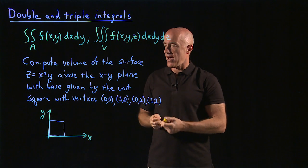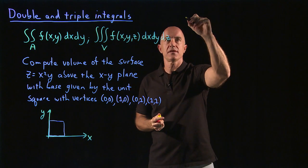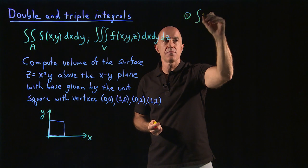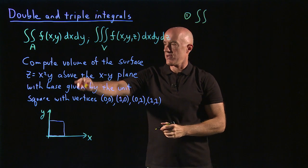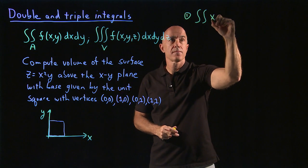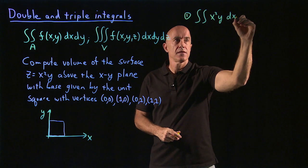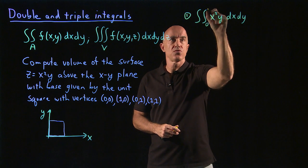So how do we set this up? So I'm going to show you two ways of doing this. In the first way, we're going to do a double integral of the function, which is x squared y. And we can integrate dx dy, x goes from 0 to 1, y goes from 0 to 1.